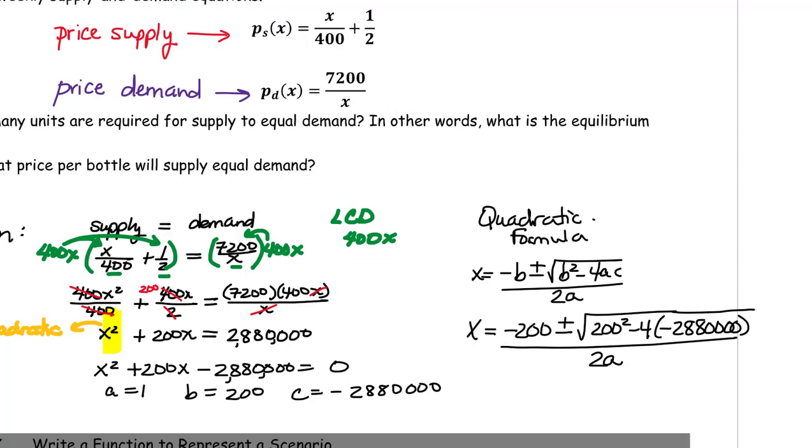So that gives us X equals negative 200 plus or minus the square root of 200 squared minus 4 times 1, although we don't have to write the 1, times negative 2,880,000 over 2 times 1. So that's just a 2.